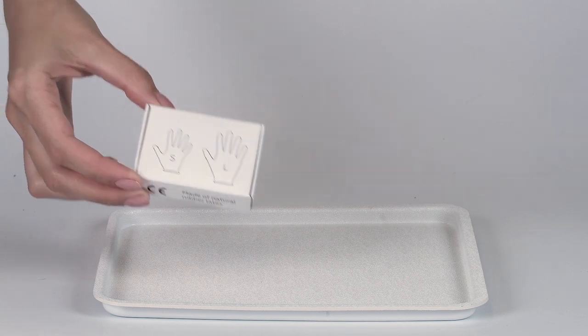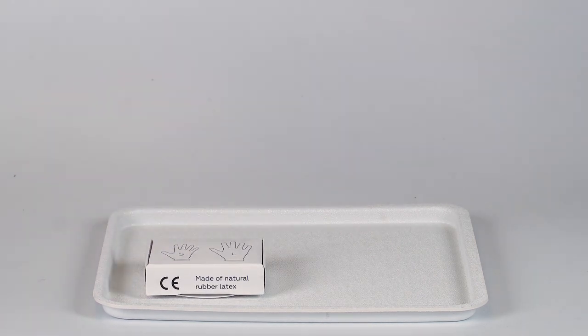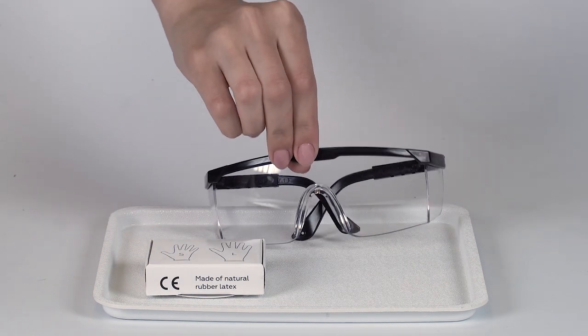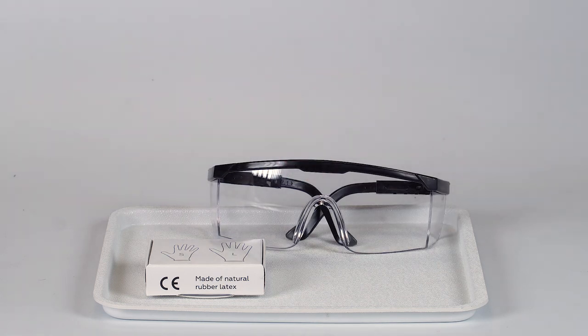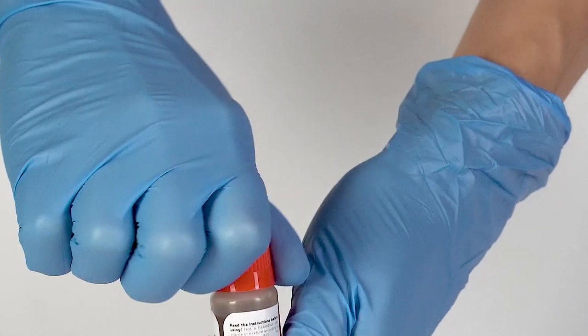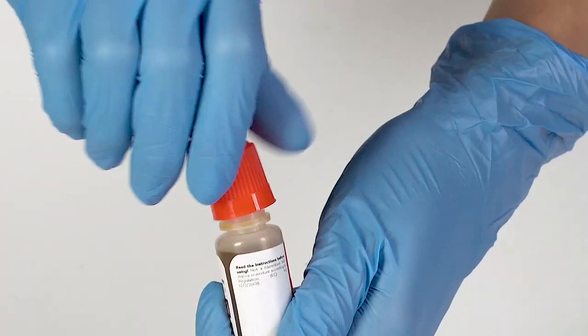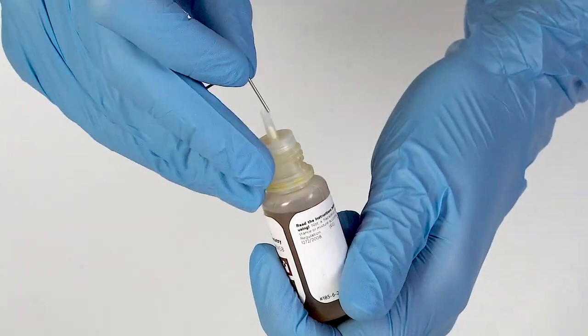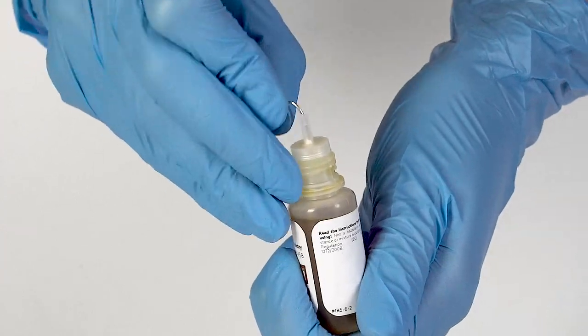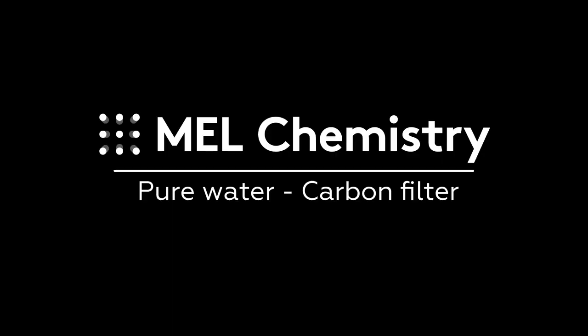Perform this experiment on the plastic tray to contain any possible spills. Don't forget to put on protective gloves and goggles before doing the experiment. To open a bottle containing a reagent, push the cap down and turn it. Pierce the bottle nozzle with an unbent paper clip.